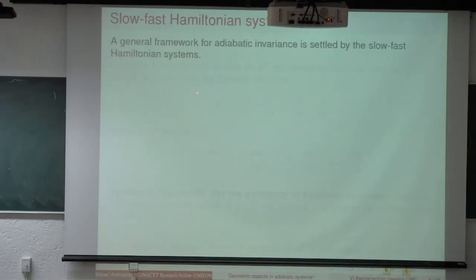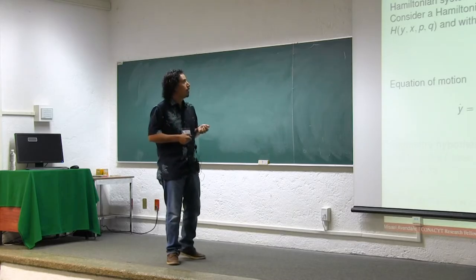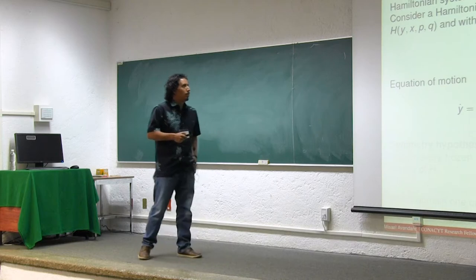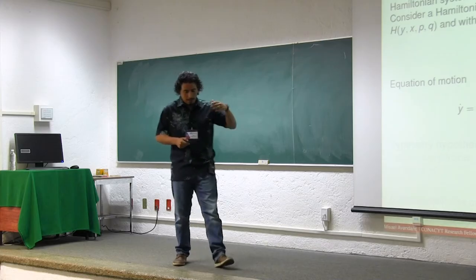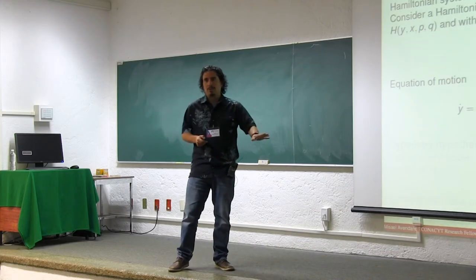A general framework for adiabatic invariants is settled by the slow-fast Hamiltonian systems. For example, consider a Hamiltonian system on R4, for simplicity, with a Hamiltonian function h and with a Poisson structure Psi_epsilon. Here appears a parameter epsilon, and from now on epsilon will be a small parameter.